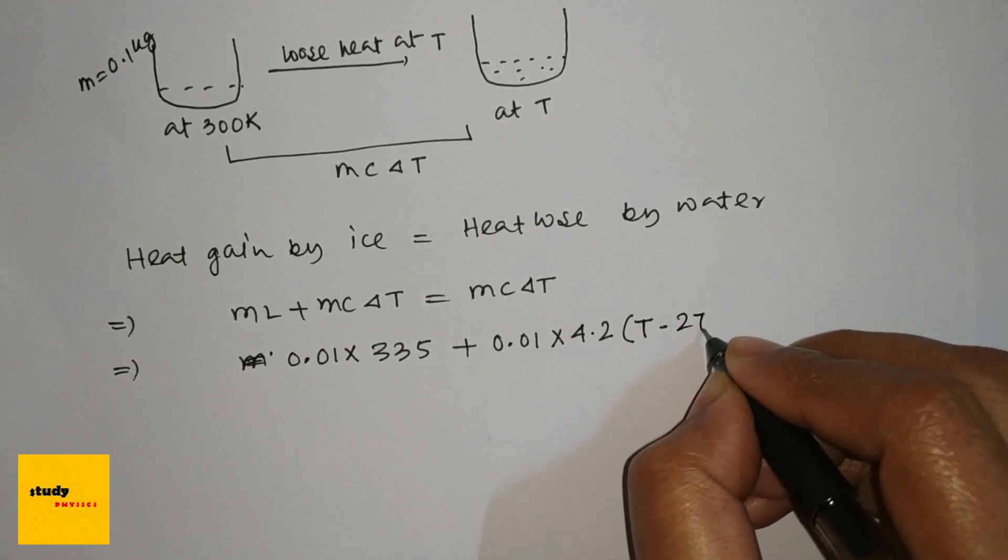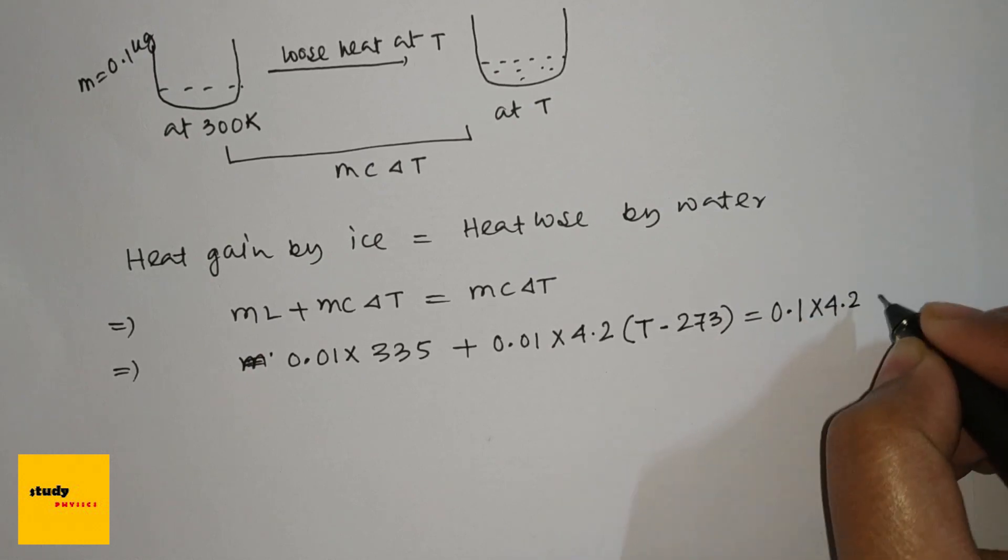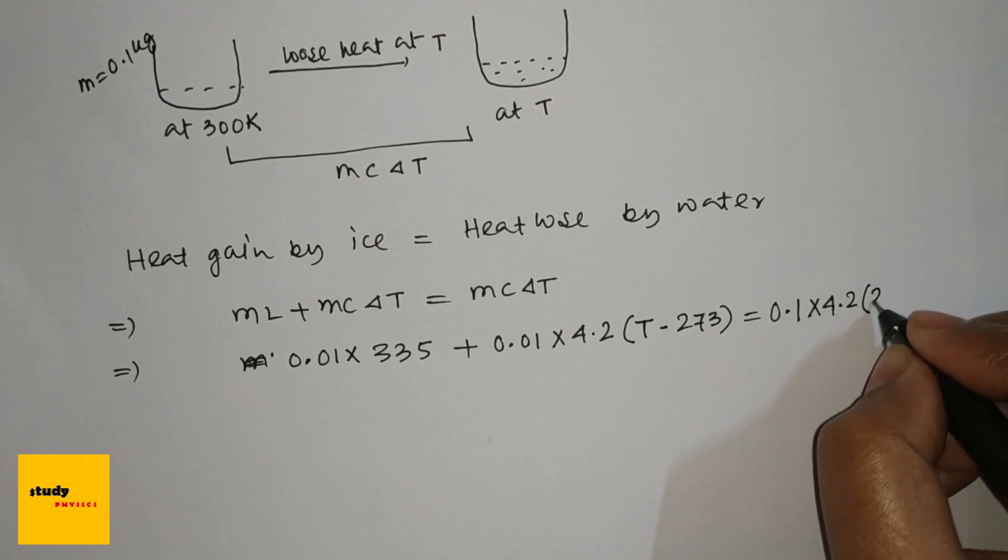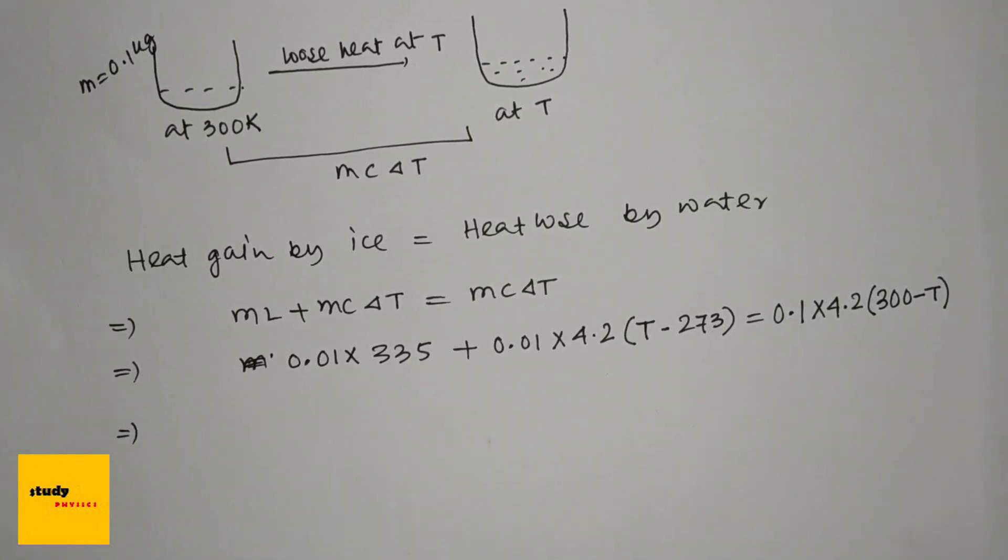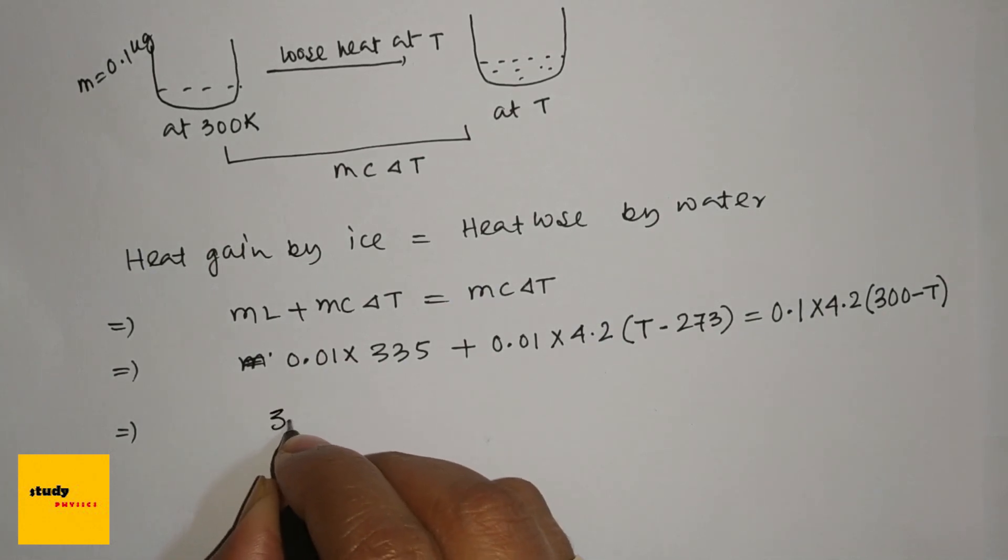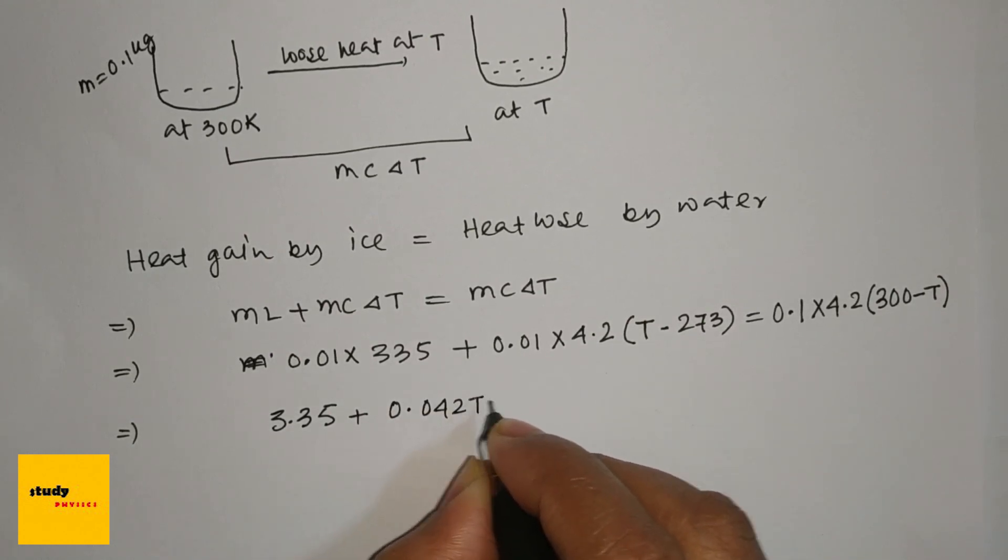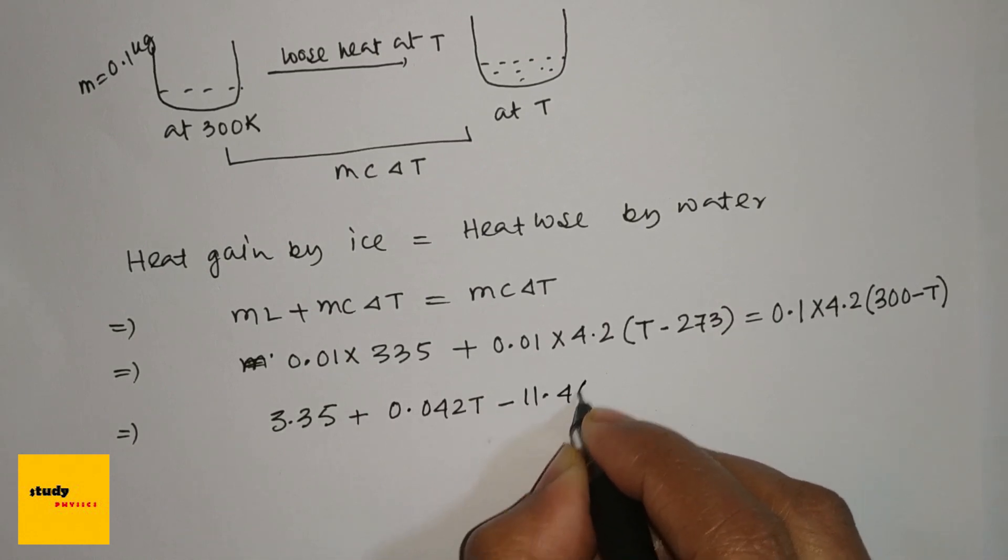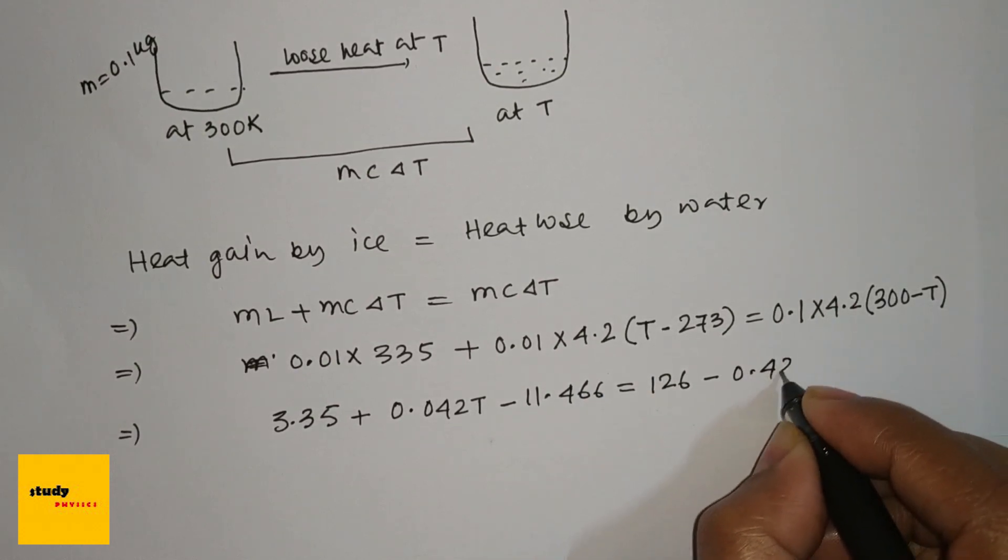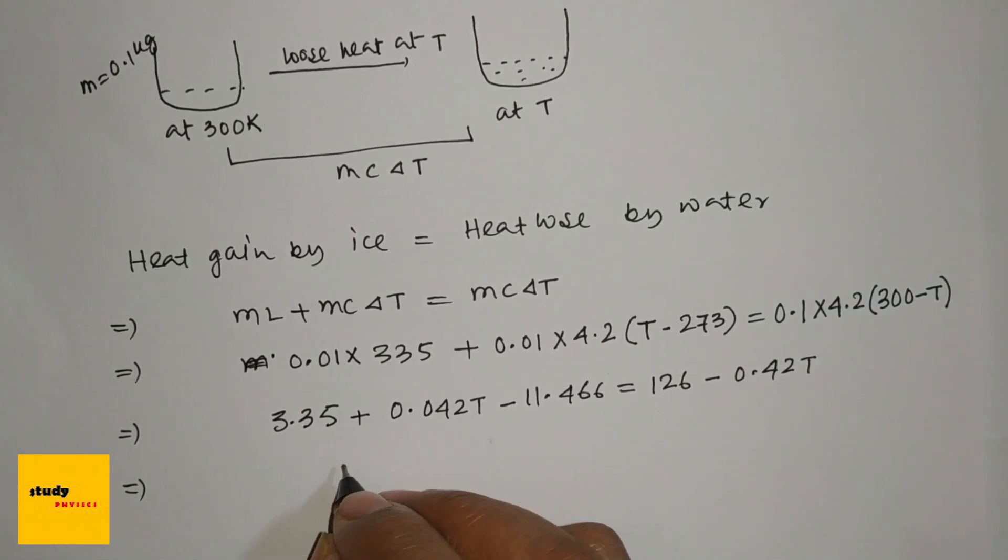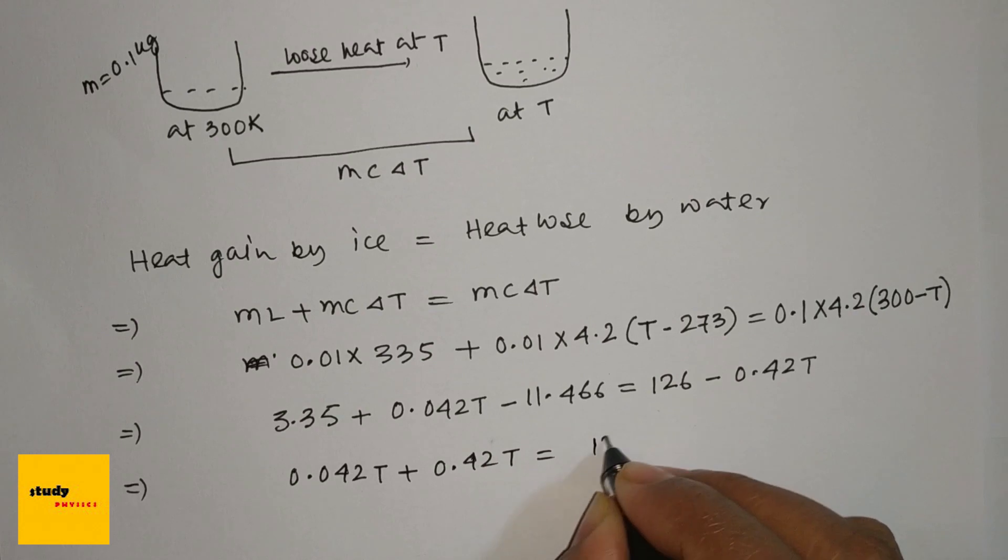And temperature difference here is T final, so T minus 273, equals here 0.1 kg times 4.2 kilojoules per kg Kelvin, and here final is 300 minus T. So this is 3.35 plus 0.042T minus 11.466 equals 126 minus 0.42T. And 0.042T plus 0.042T equals 126 minus 3.35 plus 11.466.